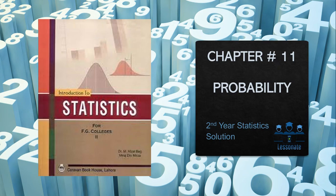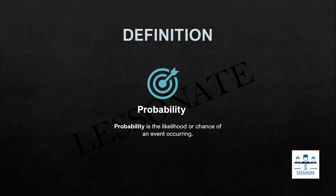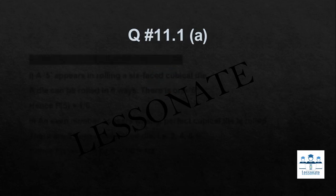Assalamu alaykum students and welcome back to my channel. This is lesson 8, covering solutions of chapter 11 on probability for second year statistics. Basically, probability is the likelihood or chance of an event occurring. For example, if you toss a coin there is a head and a tail, so there is a 50-50 percent chance — one by two — that head or tail will come. That is known as probability: the chance that any event or result can occur.